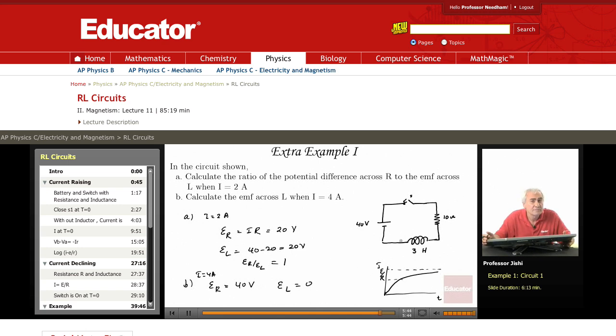It stops changing, and so DI over DT becomes 0. And so the induced EMF across L becomes 0. Or we can see it right away from here, that the battery has 40 volts, and already 40 volts appear across R. So by Kirchhoff's law, the potential difference across L is 0.